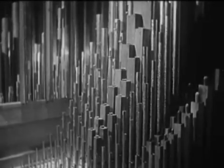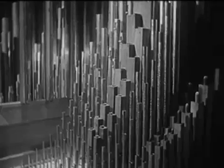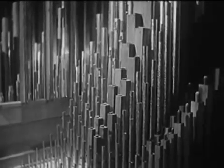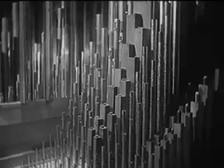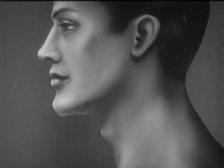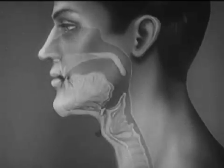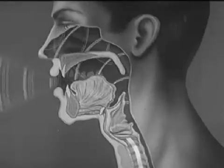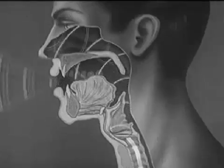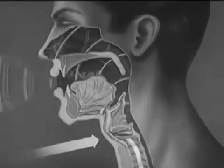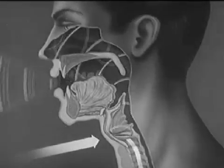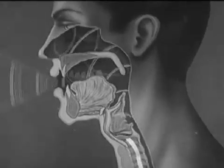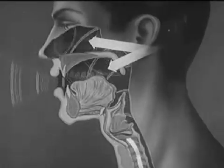Besides woodwind instruments and organ pipes, another mechanism that depends upon a vibrating column of air for its sound is the vocal mechanism of man. Here, sound waves result from vibrations of air that start in the vocal folds of the trachea. These waves are reflected back and forth in the cavities of the mouth, nose, and head.